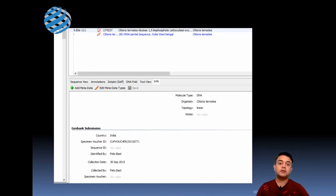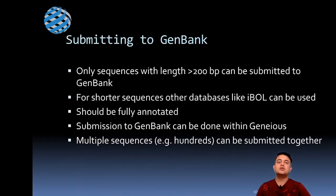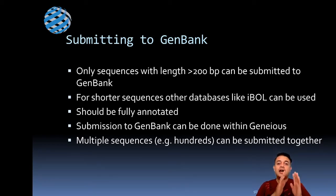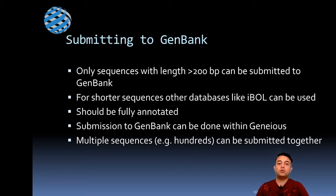If you've already submitted to GenBank and want to update this information, it is a lot of work and cannot be done in batch — it's always better to do all this before submitting. Submitting to GenBank from Geneious is very simple. You can batch-submit thousands of genes in a few clicks with well-annotated data, rather than submitting one by one. I never recommend submitting one by one, especially if you're working with DNA barcoding or high-throughput DNA barcoding.